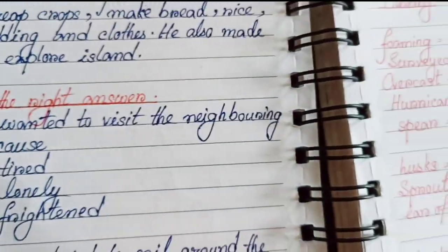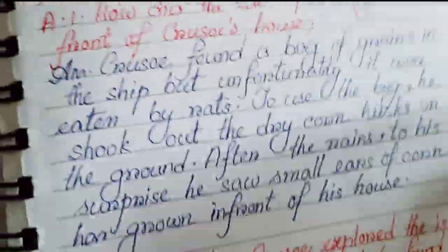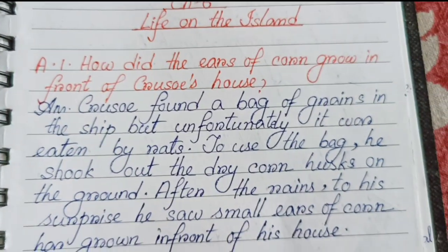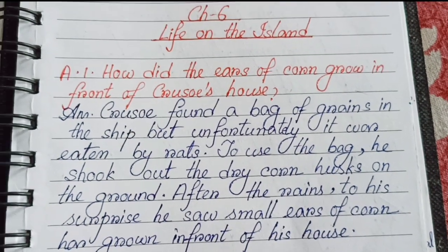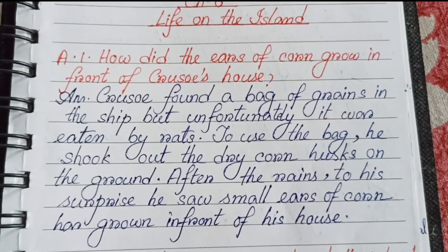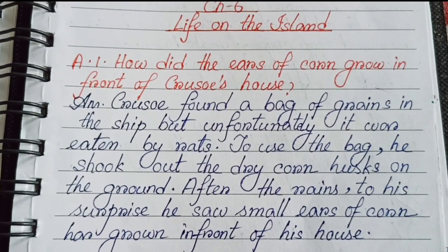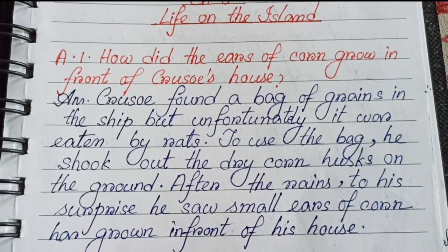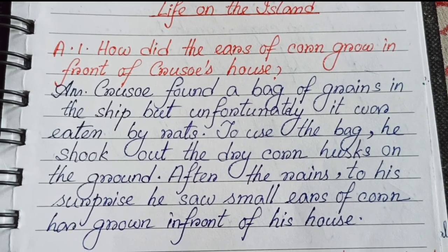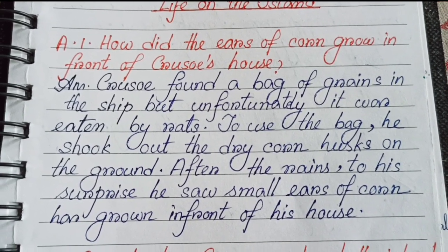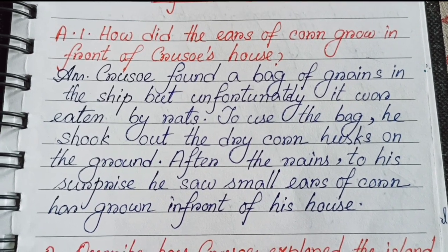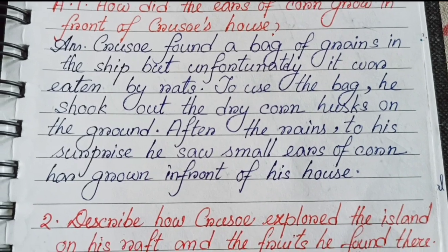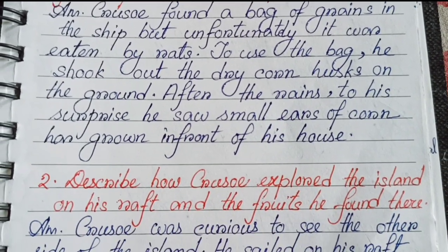Question 1: How do the ears of corn grow in front of Crusoe's house? Crusoe found a bag of grains in the ship, but unfortunately it was eaten by rats. To use the bag, he shook out the dry corn husk on the ground. After the rains, to his surprise, he saw small ears of corn had grown in front of the house.